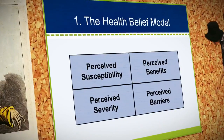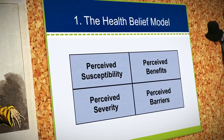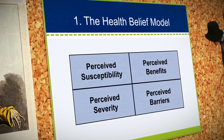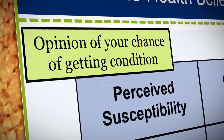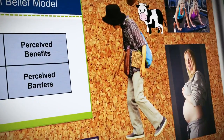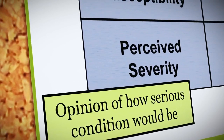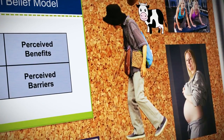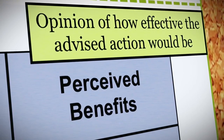Note the recurrence of the word perceived. According to the health belief model, it's our perceptions of benefits and barriers that are associated with particular actions that determine our behavior, not the real benefits and behaviors. Perceived susceptibility refers to your opinion regarding your chance of getting a particular condition — how likely do you think it is that you will develop osteoporosis, for example? Perceived severity refers to your opinion of how serious the condition would be if you were to get it.